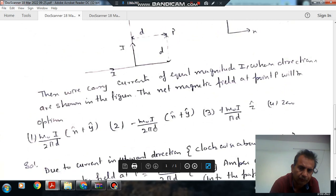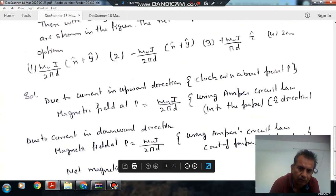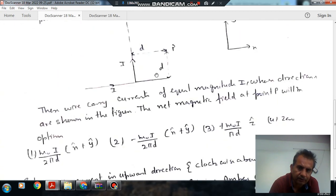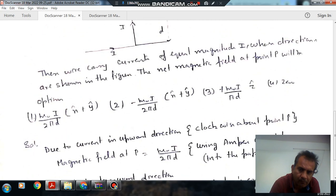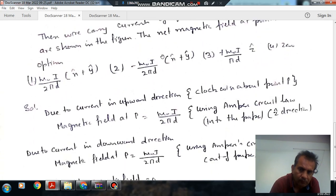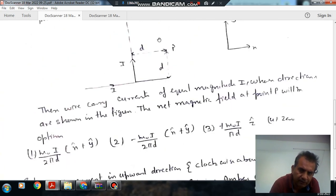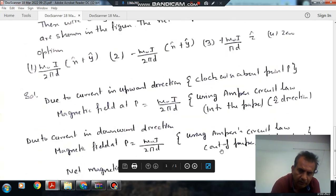So they will create equal and opposite magnetic fields. The magnetic field at point P is zero. One is making clockwise sense so the direction will be inward, and the other is making anticlockwise sense so the direction will be outward, into or out of the paper.